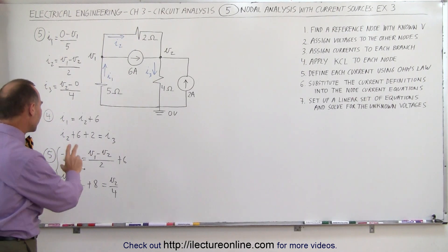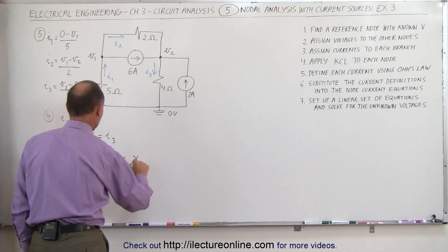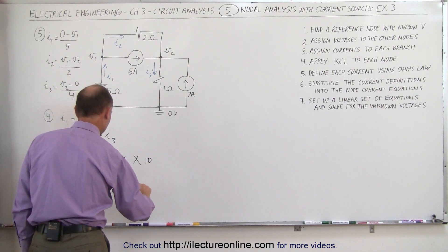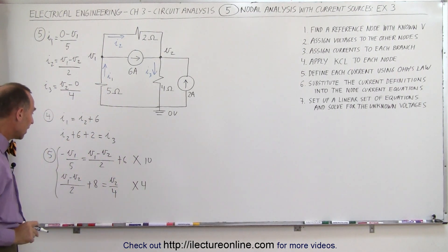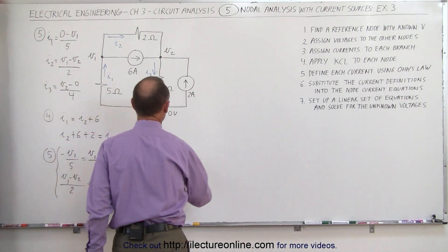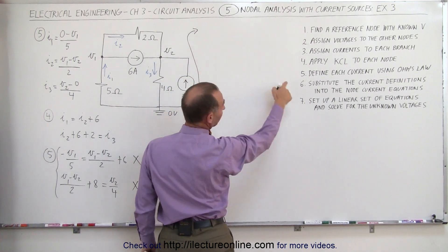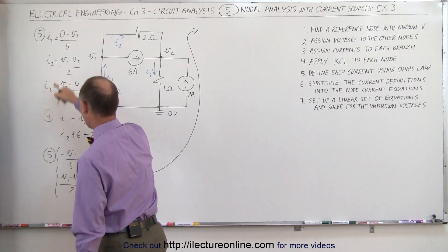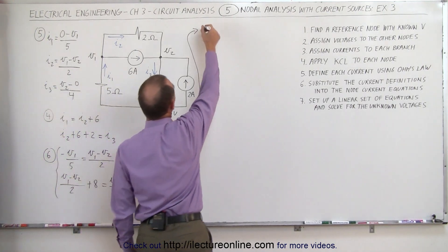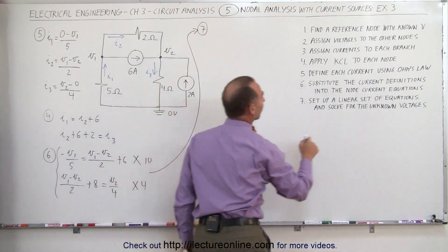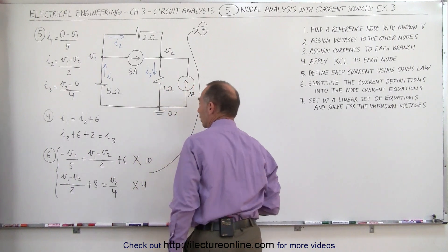Before we do, let's multiply both equations to get rid of the denominators. The first equation needs to be multiplied by ten, and the second equation should be multiplied by four. This is step seven: we're going to set up a linear set of equations by simplifying these and rearranging the variables.